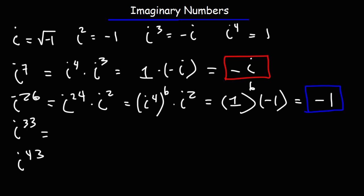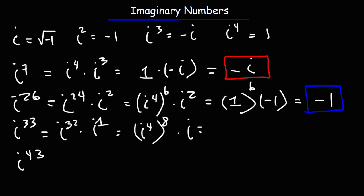Now let's move on to i to the 33rd power. The highest multiple of 4 just under 33 is 32. So we can break up 33 as 32 plus 1, and 32 is 4 times 8. So this is going to be 1 raised to the eighth power times i, which is simply i.